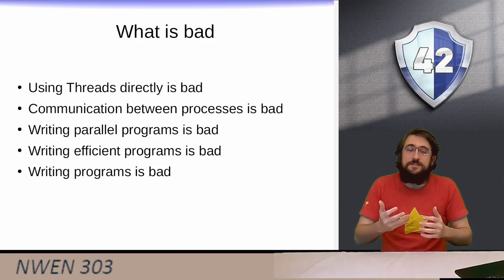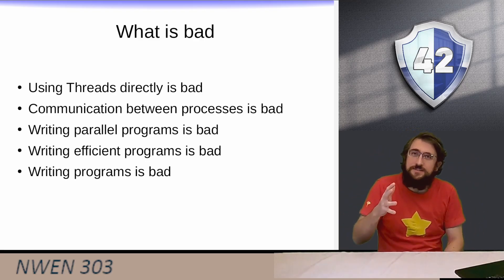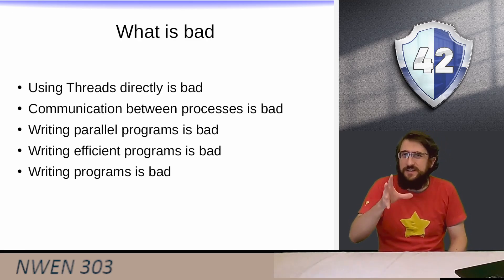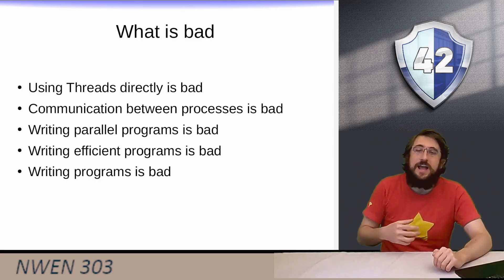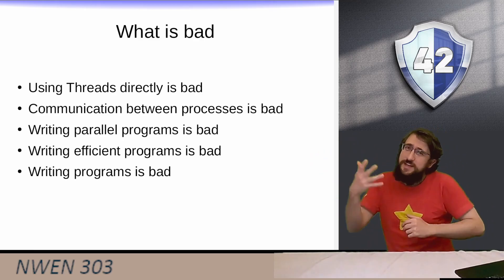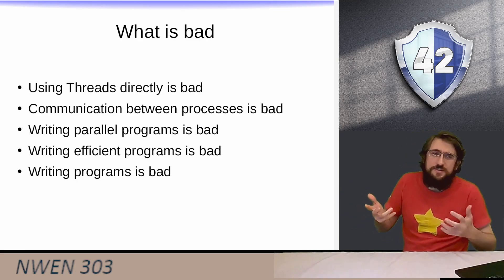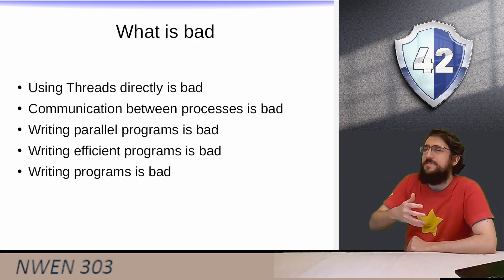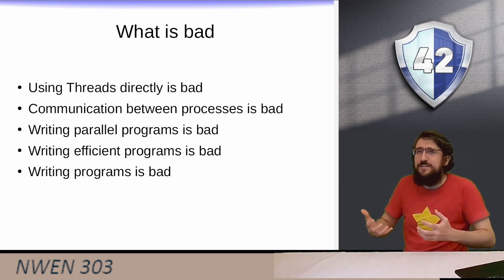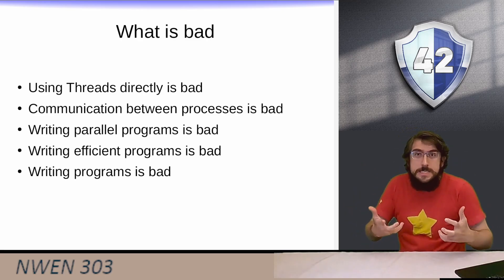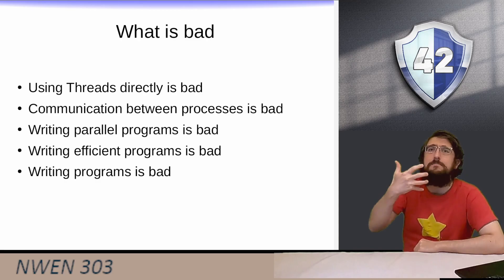For part two of our lecture three, we are going to have an opinionated sequence of things that are bad or good while coding in parallel environments, or while coding in general. I have this interesting list that is definitely controversial: using threads directly is bad, communication between processes is bad, writing parallel programs is bad, writing efficient programs is bad, and in general, writing programs is a very bad idea. In the next few minutes, I'm going to defend all of those points.